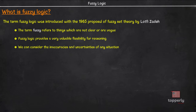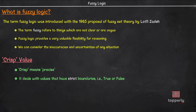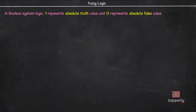Before we dive deeper into this lecture, let us understand what is a crisp value. The term crisp means precise and it deals with values that have a strict boundary, i.e., true or false. The value should be either true or false to be called a crisp value and it cannot contain any in-between values. In a Boolean system, 1 represents absolute truth value and 0 represents absolute false value — that is, 1 is true and 0 is false.